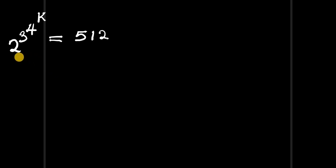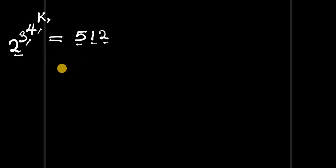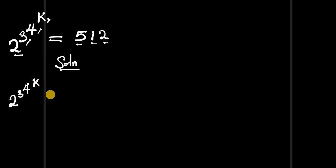Hello! In this video we have an interesting exponential equation: 2 to the power of 3 to the power of 4 to the power of k, and this equals 512. We are going to find the value of k that will satisfy this equation. So let's start with the solution. We can record the problem: 2 power 3 power 4 power k equals 512.